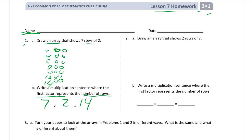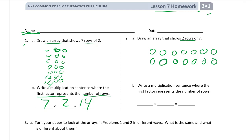Draw an array that shows two rows of seven. We need one row of seven first: one, two, three, four, five, six, seven. And we need two rows: one, two, three, four, five, six, seven. There are two rows, seven in each row. Write a multiplication sentence where the first factor represents the number of rows: two rows, seven in each row — it's going to be 14 again, because of the commutative property. The order of the factors doesn't matter; you get the same product.